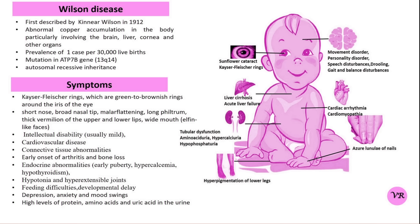Wilson disease is estimated to occur in about 1 in 30,000 to 1 in 40,000 live births worldwide. The prevalence is relatively consistent across different geographic regions, though specific figures can vary based on local population studies. Due to its severity and the wide range of symptoms that can overlap with other conditions, Wilson disease may sometimes be underdiagnosed or misdiagnosed. Advances in genetic testing and increased awareness have improved diagnostic accuracy and earlier detection.